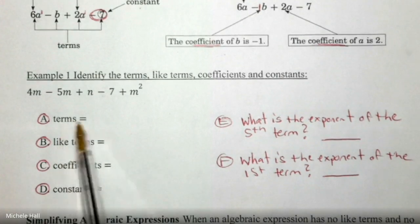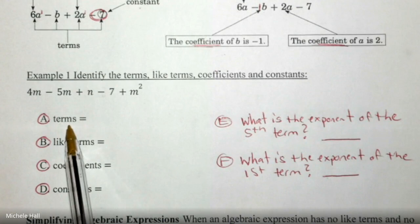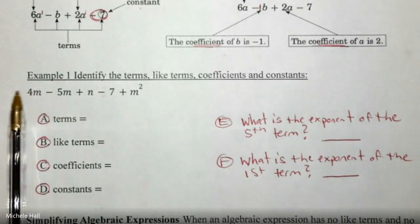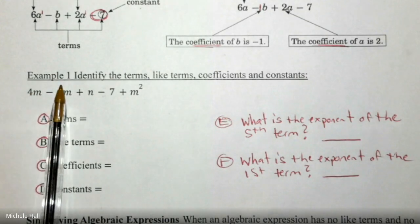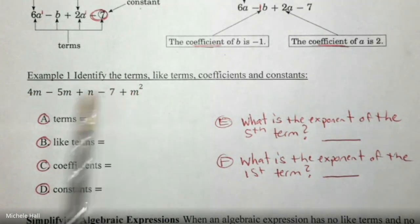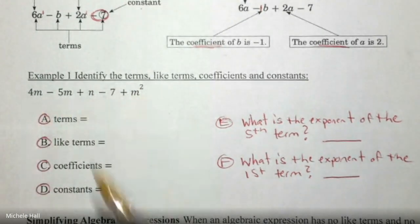Terms. How many terms do we see here? Remember that terms are separated by plus and minus signs. So I have one term, two terms, three terms, four terms, five terms. There are five terms in this expression.